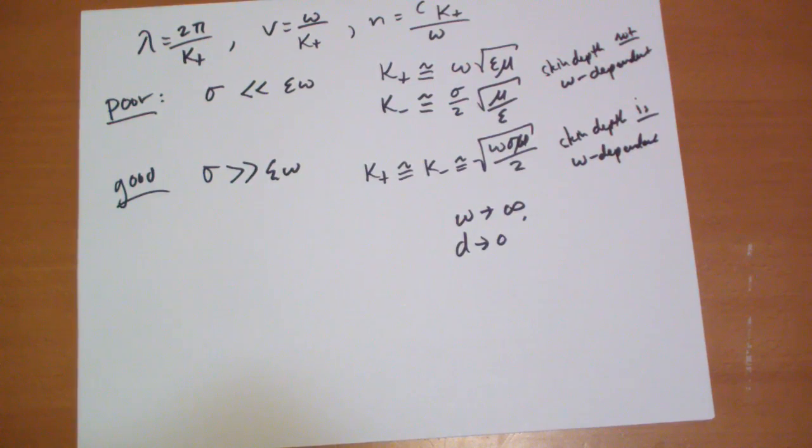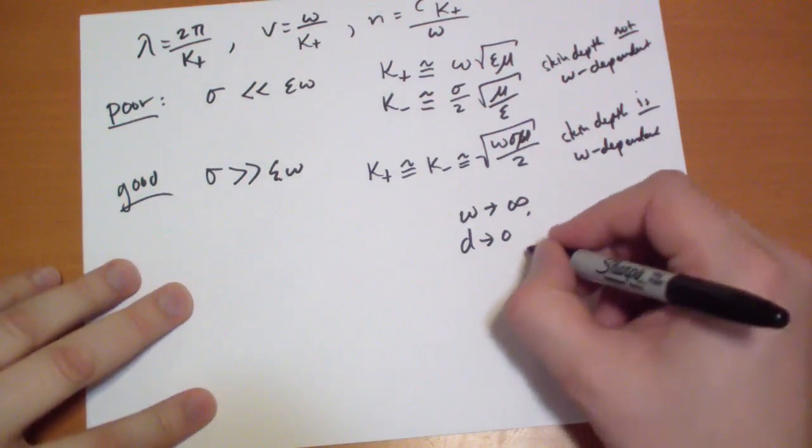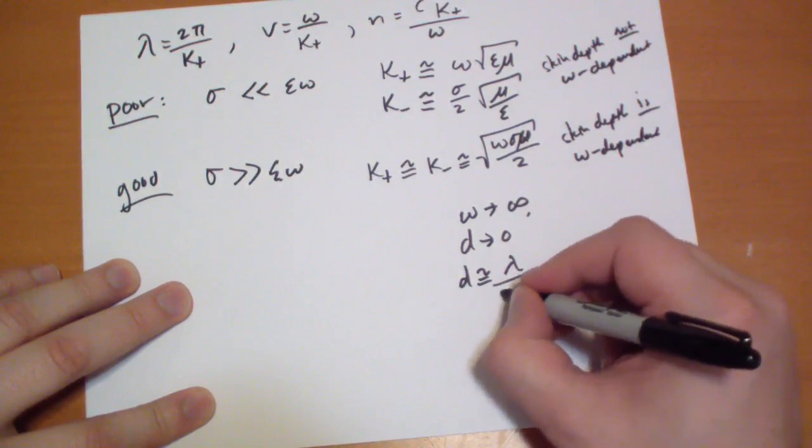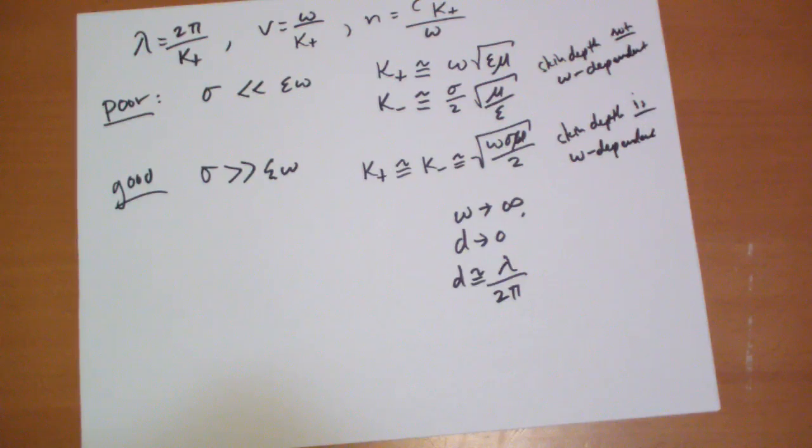So as we go on higher and higher frequency shorter and shorter lambdas get smaller in fact the skin depth is about equal to lambda it's about equal to the wavelength of the wave that we're talking about.